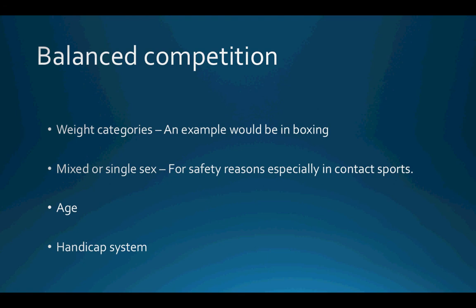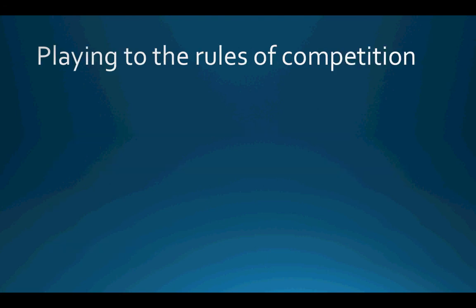We also have a handicap system to ensure balanced competition. This is another way to ensure that competition is fair and equal. The obvious example is golf — it's a way of ensuring that players of unequal ability can play in direct competition with each other. For instance, a handicap system would allow you to go out and play with the likes of Rory McIlroy on an even par.